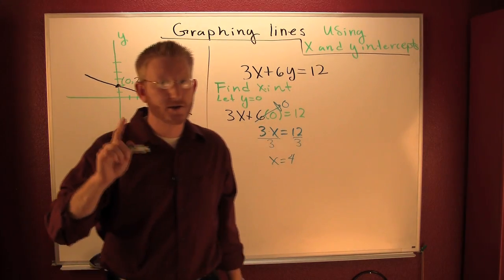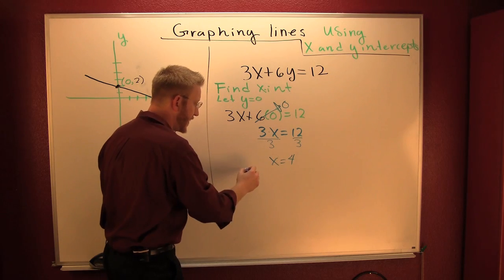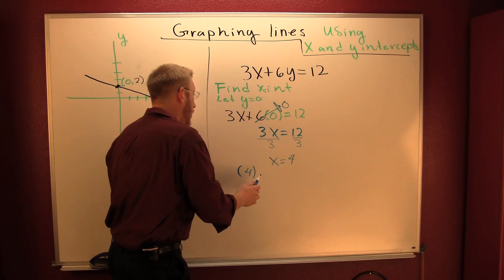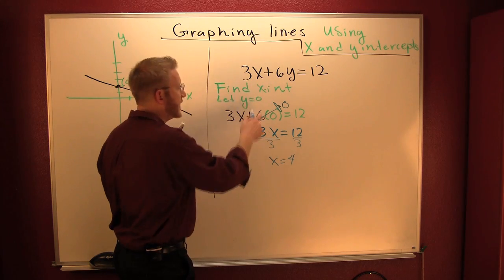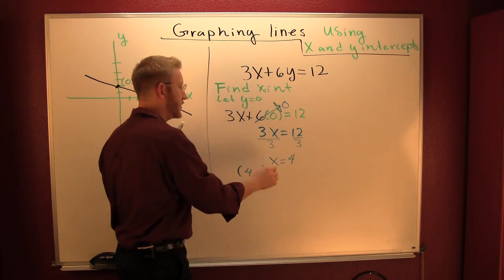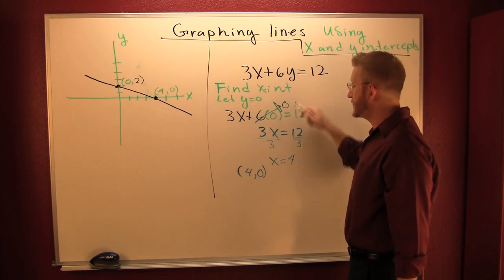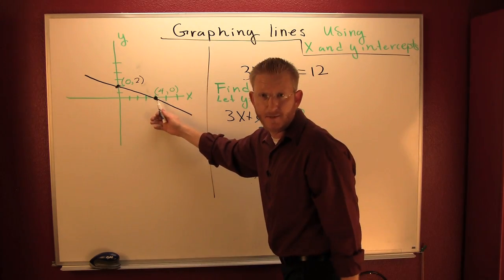So let's look at that point. My point, what's my x? 4. What's my y? It's 0. So what's my point? My point is that the x intercept is a point. Just so happens to be the same point up there.